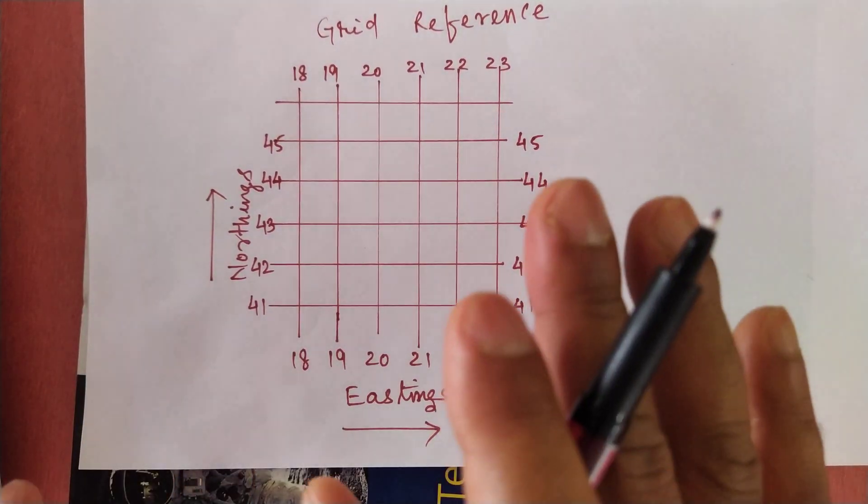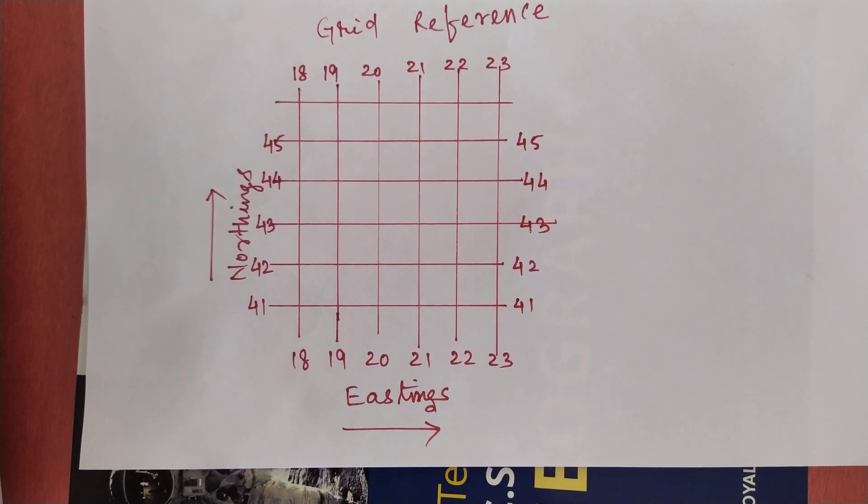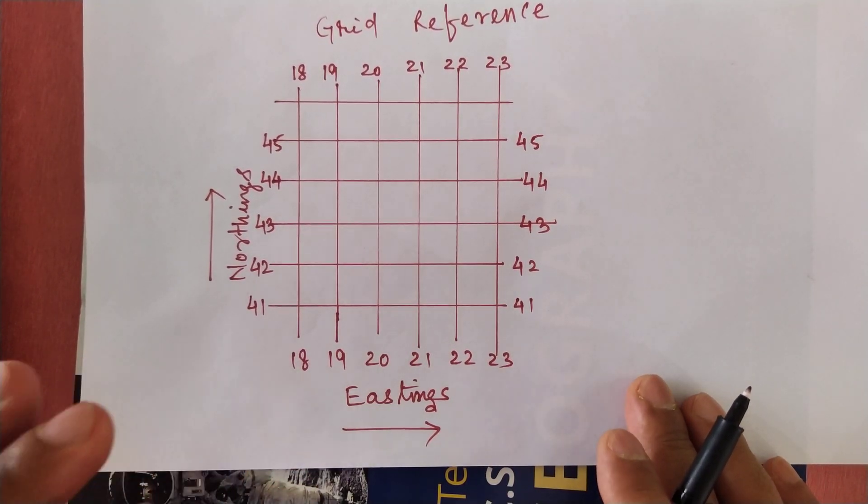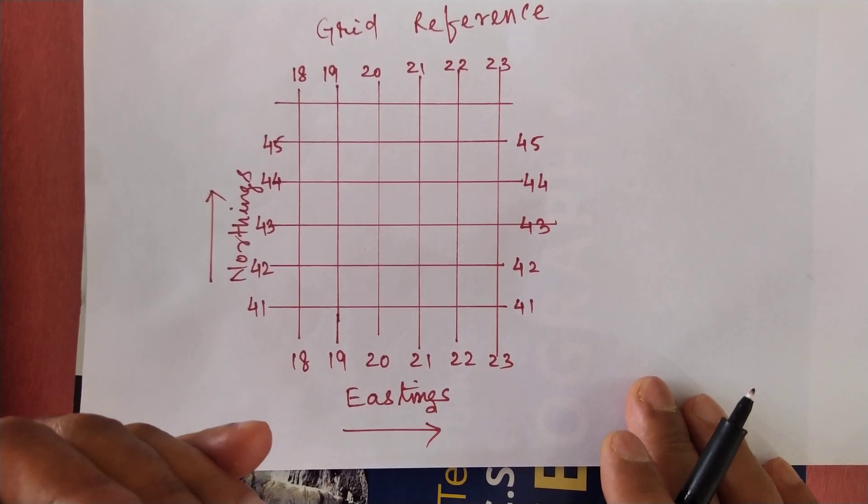So these Eastings and Northings are drawn in red lines on the topographical map.